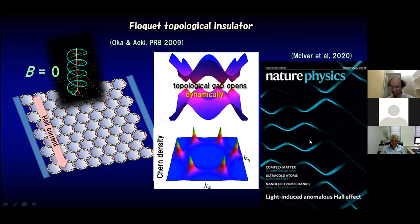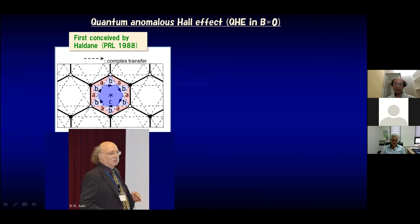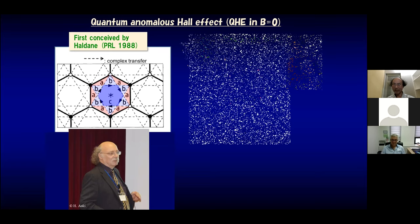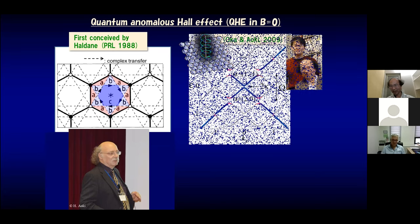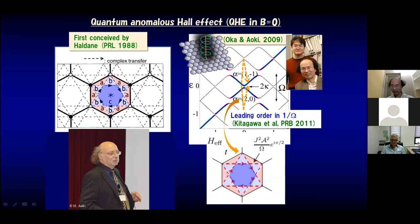These are the topological gaps giving rise to the anomalous Hall effect. We call it anomalous Hall effect because Duncan Haldane, back in 1988, conceived the quantum anomalous Hall effect — quantum Hall effect in zero magnetic field — with a rather artificial theoretical toy model. But if you shine circularly polarized light on graphene, Kitagawa and company in Harvard showed that in leading order of the high-frequency expansion, the effective model is exactly the same as Haldane's model. So this is very realistic.